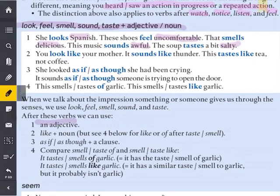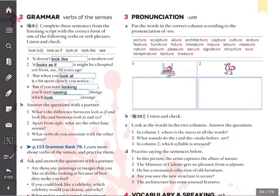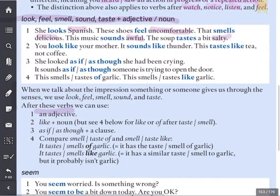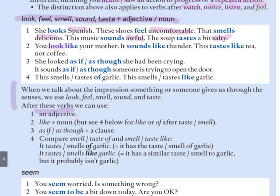Number two has a slight modification. We use 'look like', 'sounds like', 'tastes like' — and what comes after is a noun. You look like your mother. It sounds like thunder. It tastes like tea, not coffee. So we use 'like' plus a noun. Generally speaking, we use look like, feel like, sound like plus a noun.